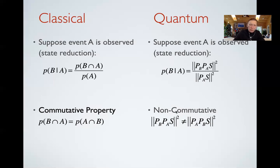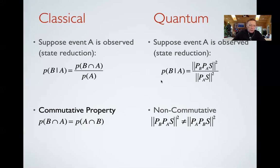If the events were all commutative, then quantum theory would reduce exactly to classical probability theory. Quantum probability generalizes classical probability by introducing non-commutative projectors, which represent subspaces where there is no A-and-B intersection forming a subspace — there's only an A-then-B sequential probability. The event that comes first, we project on that first; the event that comes second, we project on that second. That's how we compute the sequential probability in quantum theory.